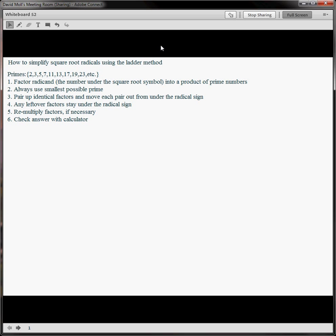Here's a really nice method of how to simplify square root radicals using a ladder method. I like this because it's very predictable. First of all, we're going to factor the radicand, the number under a square root symbol, into a product of prime numbers.